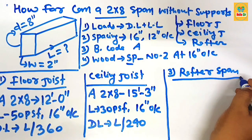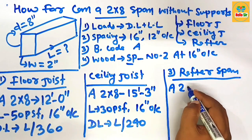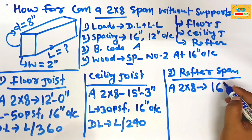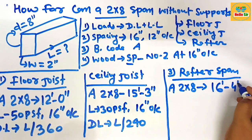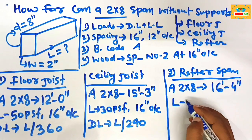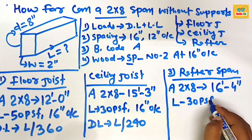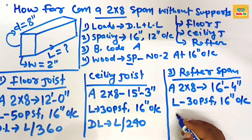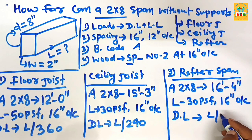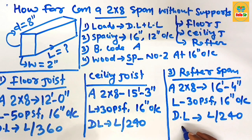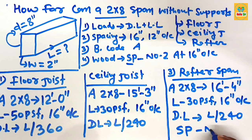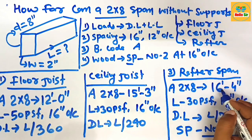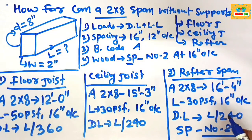Third, the rafter span: a 2 by 8 dimensional lumber as a rafter can span a maximum distance of 16 feet 4 inches. The conditions are a load of 30 pounds per square foot, spacing of 16 inches on center, a deflection limit of L/240, and southern pine number two grade wood species.